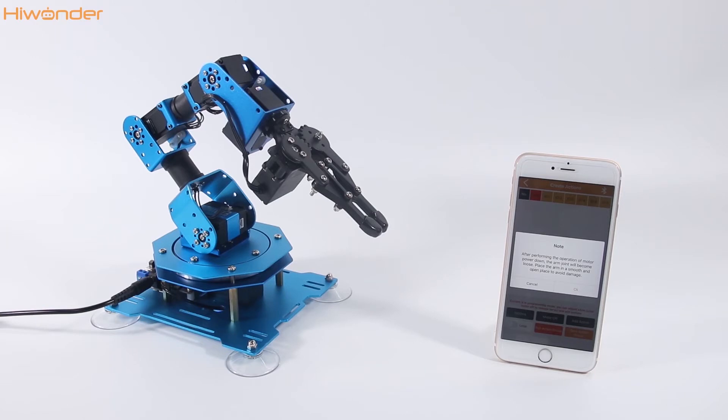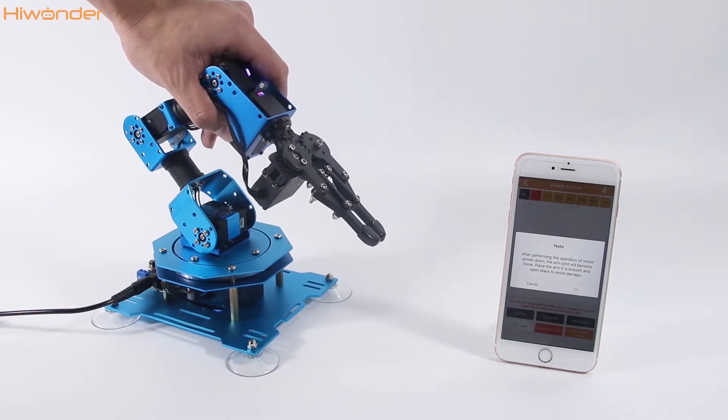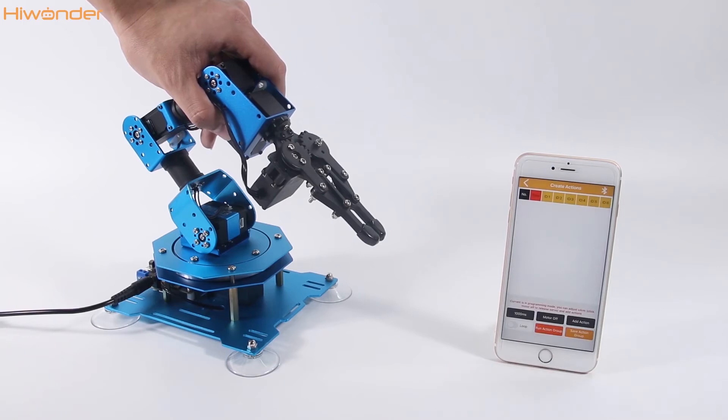Please note that when you click motor off, the servos of the X-Arm will power down, so you may need to hold the robotic arm to avoid damage. Hold it and click OK.